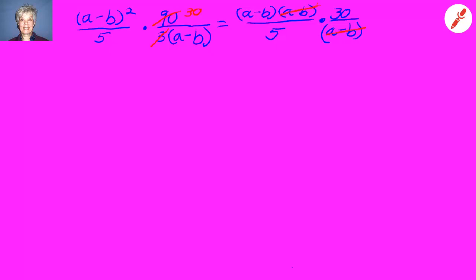We can cross cancel the a minus b's, and 5 goes into 30 six times. So our answer is going to be 6 times the binomial a minus b. And draw a minus b and draw a line under that to separate it from the next problem.